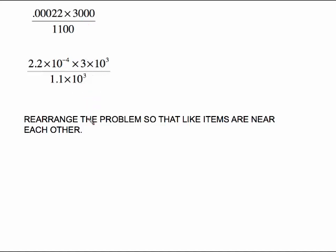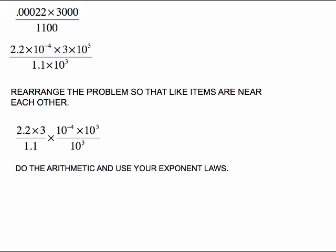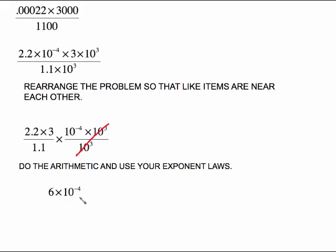Then, like we've done on the last ones, rearrange the problem so that your like items are near each other. So I'm going to get this plain old number, this plain old number, and this plain old number, and they're all going to go in one fraction. And then all of the powers of 10 are going to go in another fraction. So that's this problem. And we know from the last problems we did, we want to let the calculator do this and let our exponent laws take care of this. Now this is kind of nice. 10 to the third over 10 to the third just cancels out. We can just get rid of those. So there's really no big exponent law we have to do on that. 2.2 times 3 divided by 1.1 on your calculator just gives you 6. And then we already canceled that out, times 10 to the negative 4.